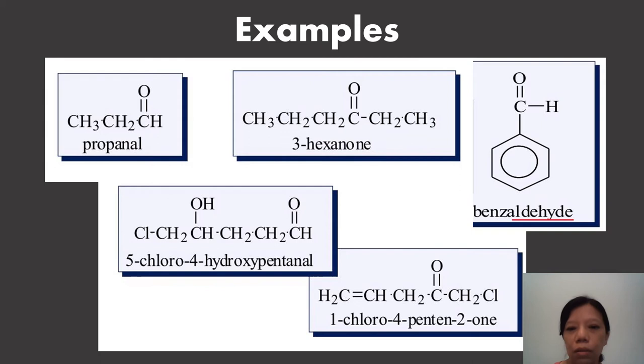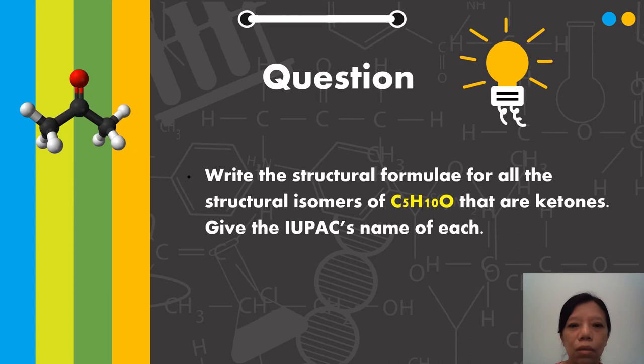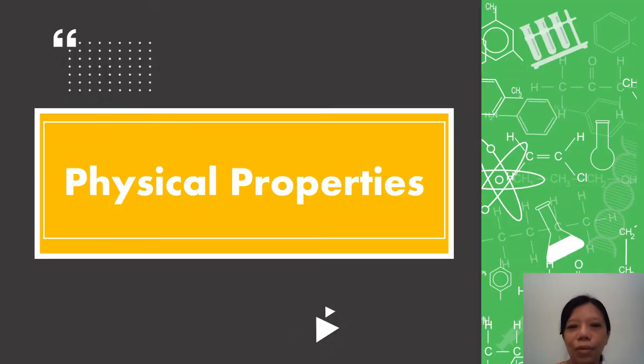If you have a double bond, the pentene changes to pentenone. Then number the double bond. Always the carbonyl group gets priority, so always give the lowest number to the carbonyl group. So 1, 2, 3, 4. For aldehydes bonded directly to the benzene ring, you use the common name benzaldehyde. For this exercise, write all the structural formulas of C5H10O that are ketones and use the name.